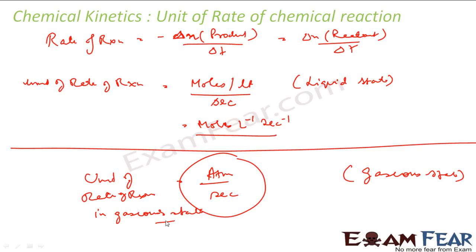We have two different types of rates — instantaneous rate and average rate — and in both cases the unit is the same. For a liquid solution it is moles per liter per second. In the gaseous state, for example H₂ plus O₂, we use atm per second, where atm stands for atmospheric pressure.